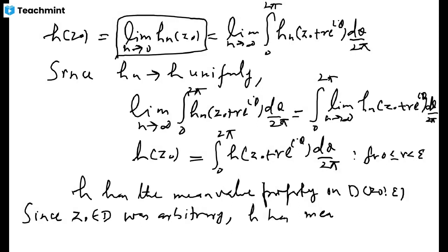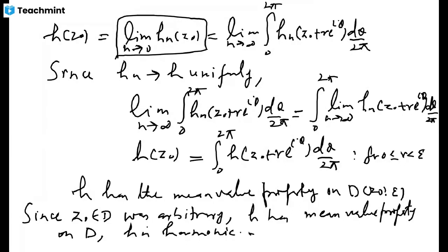We do not have to show that h has continuous partial derivatives or satisfies Laplace's equation. The only thing established here is that h satisfies the mean value property, and that is sufficient to conclude that h is harmonic.